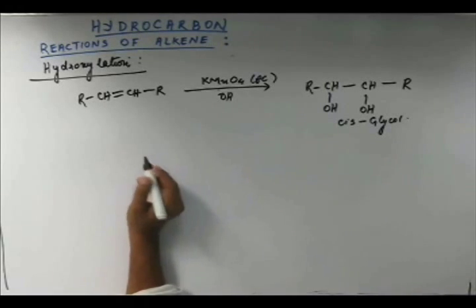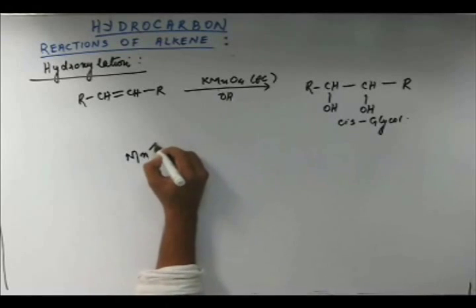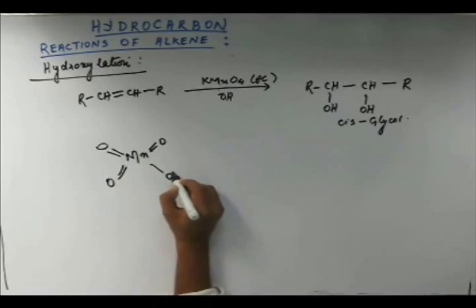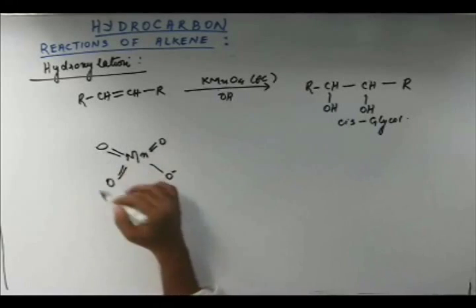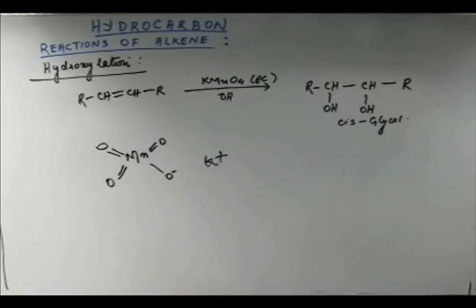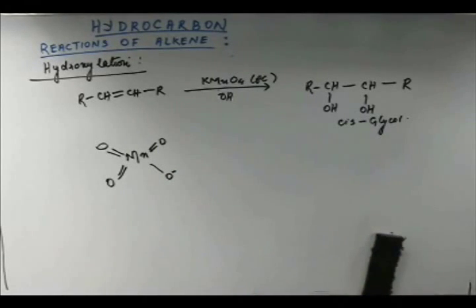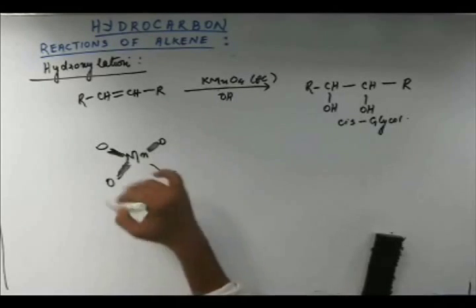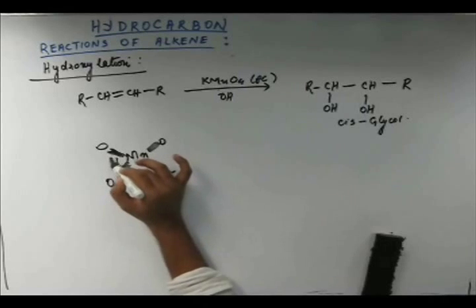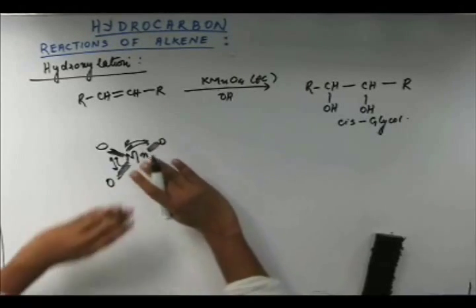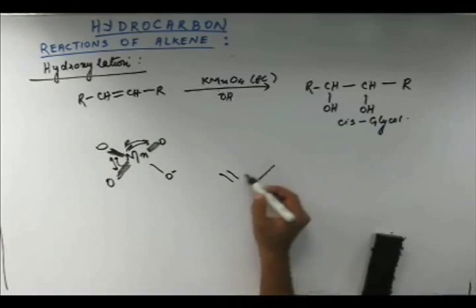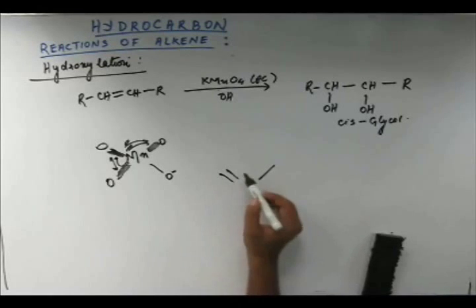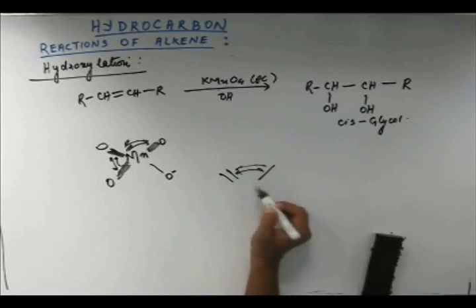Now we will see the mechanism. If you know the structure of KMnO₄, manganese forms three double bonds with oxygen and one single bond with one oxygen, giving us the permanganate ion, with K⁺ — that is KMnO₄. Around manganese there are many pi bonds, and there will be repulsion among those pi bonds. The repulsion between double bond and double bond is much higher than between a double bond and a single bond, because electrons in a pi bond are loosely held and offer larger repulsion to adjacent electron density.